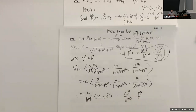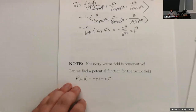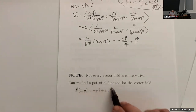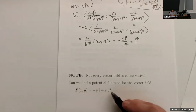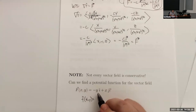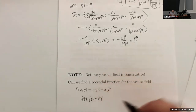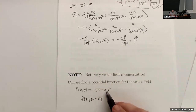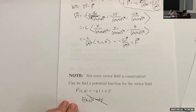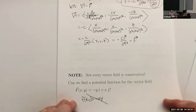Not every vector field is conservative. For example, you can't find a potential function for F = <-y, x>. If the potential f had ∂f/∂x = -y, then f would need to be -xy. But then ∂f/∂y = -x, not +x. So no potential function exists for this field — which looks similar to the curl example we saw earlier.